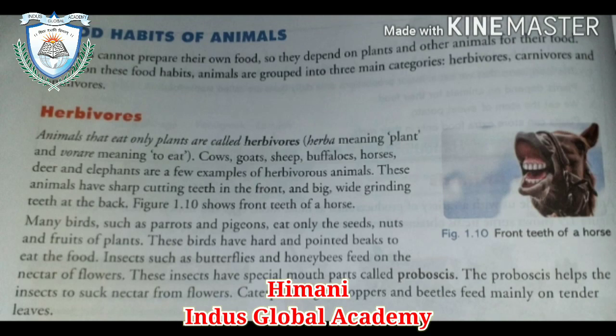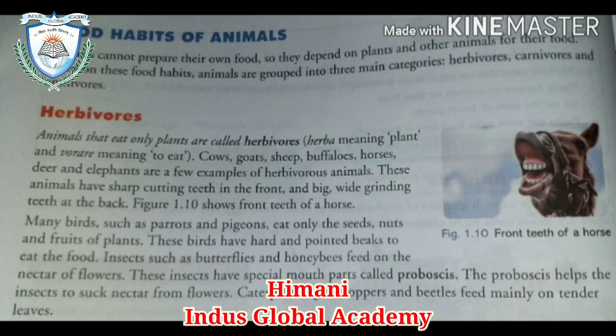These animals have sharp cutting teeth in front and big wide grinding teeth at the back. As you can see in the figure, the front teeth of the horse. Many birds such as parrots and pigeons eat only seeds. These birds have a hard and pointed beak to eat food. Insects such as butterflies and honey bees basically feed on the nectar of flowers. These insects have special mouth parts called probes, which help them to suck nectar from flowers.